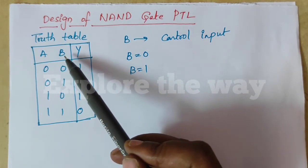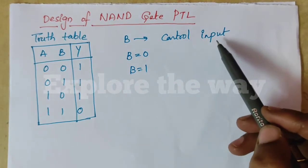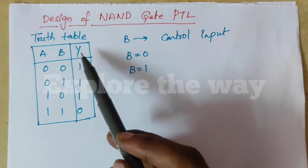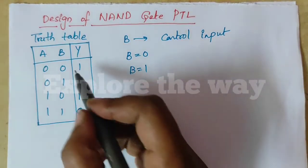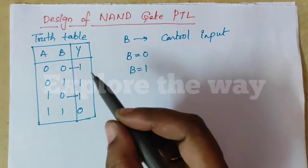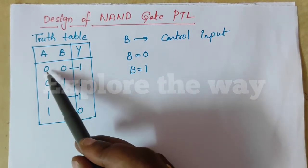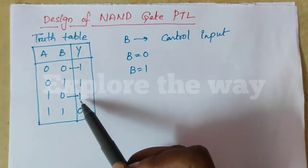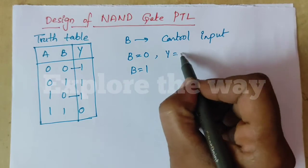Let us consider B as the control input and A as the data input. We will find the output Y. When B equals 0, irrespective of the A input, the output remains 1. So here the output is 1.